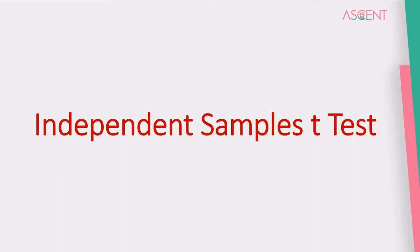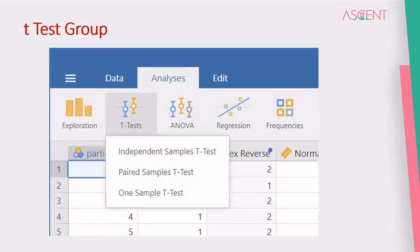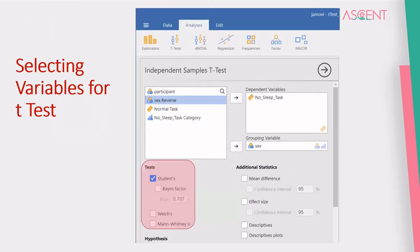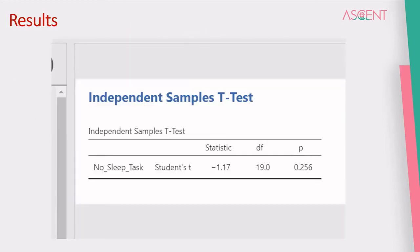Now we'll see how an independent samples t-test can be done in Jamovi. For that, we go to the t-test menu and select the appropriate t-test. For this example, we will take the independent samples t-test. We supply the dependent variable and the grouping variable and select the type of test we need to use. Once you do that, on the right side you can see the t-test table with the results — the t-statistic, the degrees of freedom, and p-value — and decide whether to reject the null hypothesis based on this p-value.